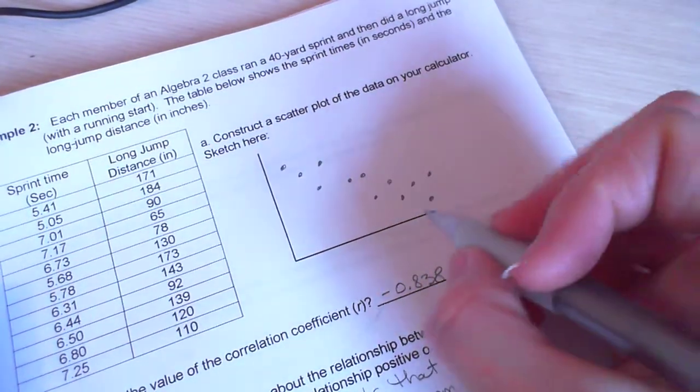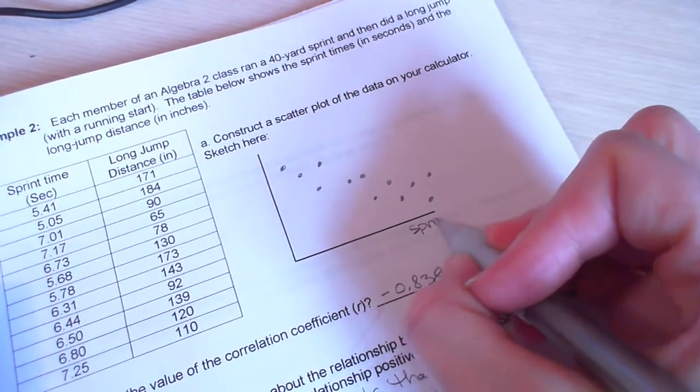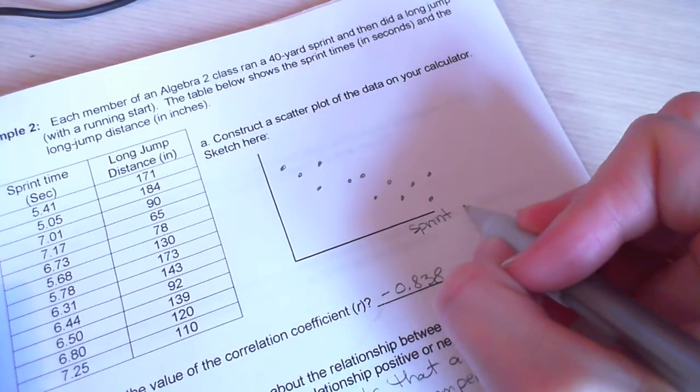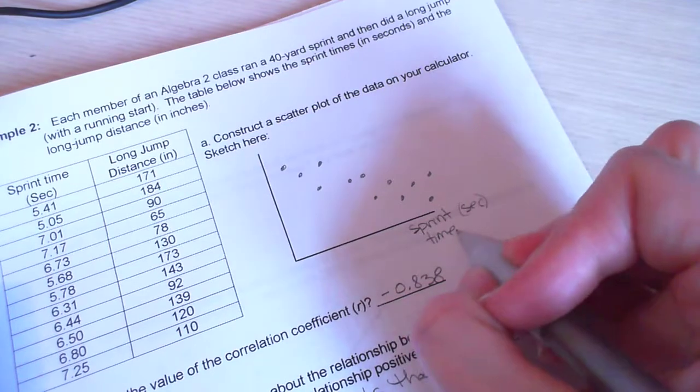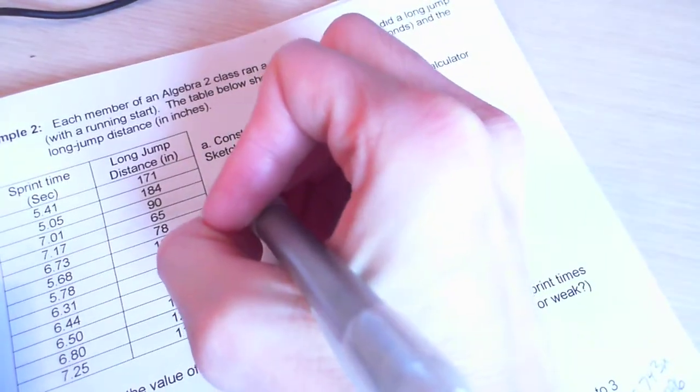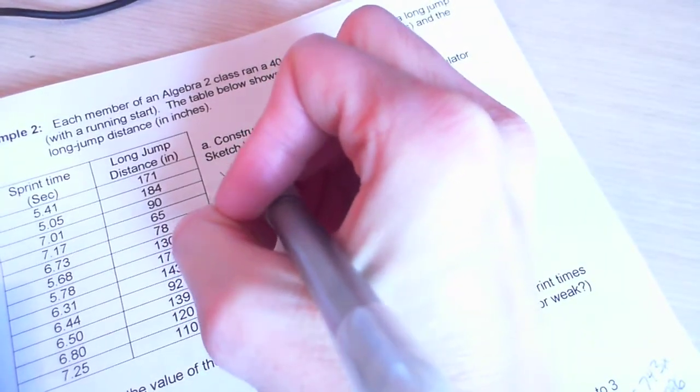First thing they're asking me to do is construct a scatterplot, which I did right here. However, I don't have my X and Y axis labeled. And you should always have those labeled. So X is sprint time and Y is distance.